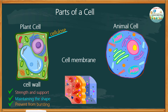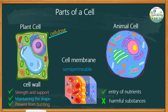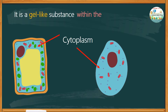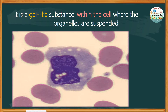The cell membrane is semi-permeable. It is very selective as to which molecules can pass through more easily than others, and only allows the entry of nutrients while harmful substances are discharged from the cell. The cytoplasm is a gel-like substance within the cell where organelles are suspended. It is where many biochemical reactions occur.